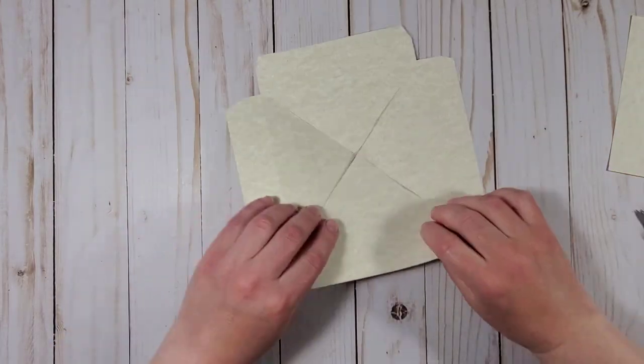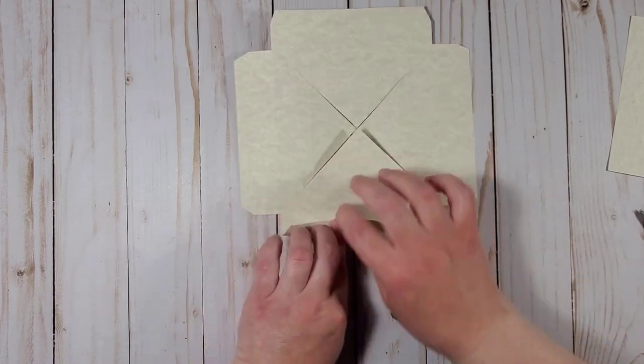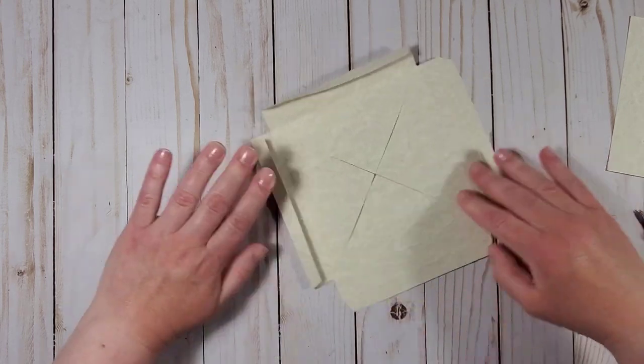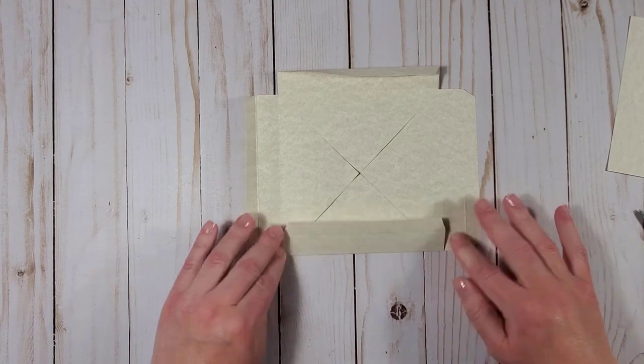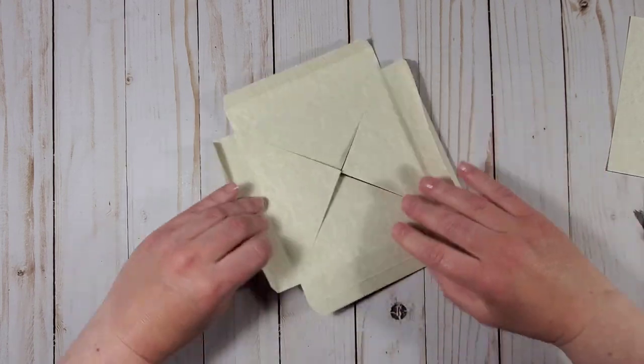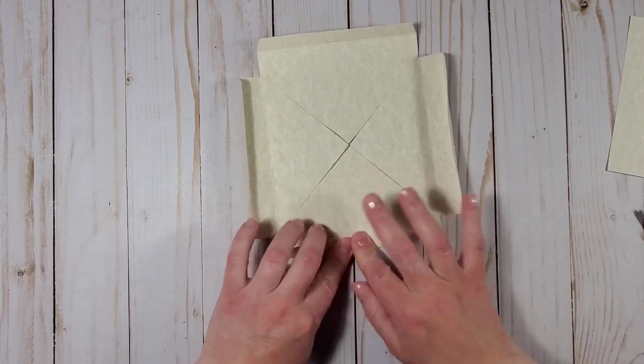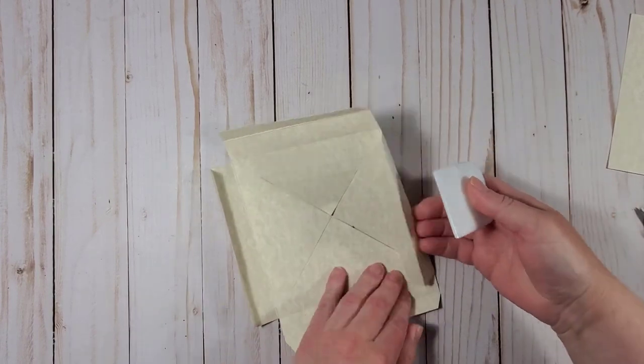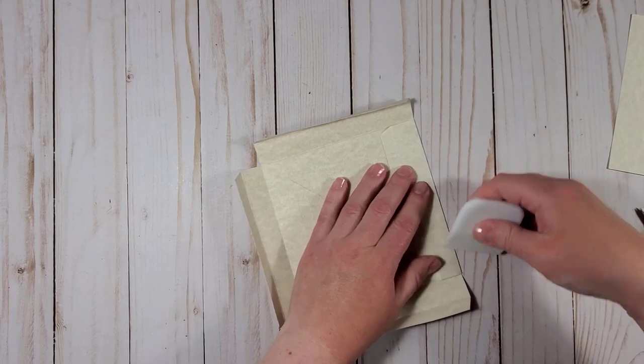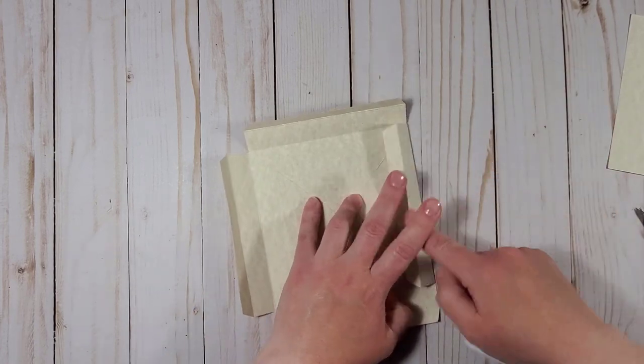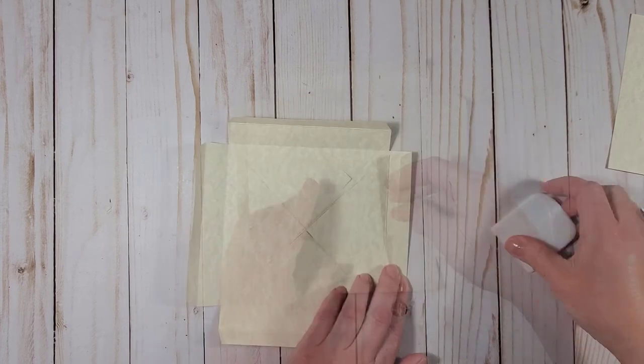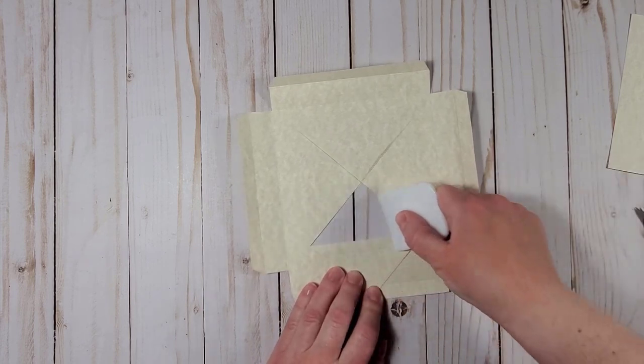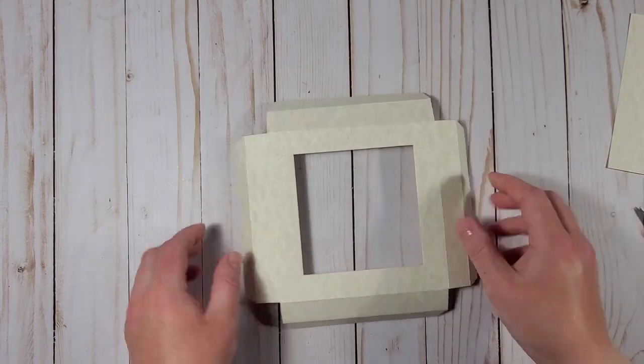Now I will go ahead and reinforce the score lines that I have on this base of my future shadow box. I'm not using a bone folder although it might be a good idea to use it still. We want our fold lines to be really crisp. I will go ahead and gently fold these triangular sections and this is our front.